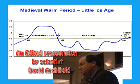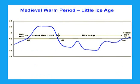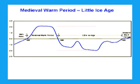This graph shows the medieval warm period and the Little Ice Age. The peak of the medieval warm period was 2 degrees warmer than today and the Little Ice Age 2 degrees colder at its worst. The total range is 4 degrees centigrade.